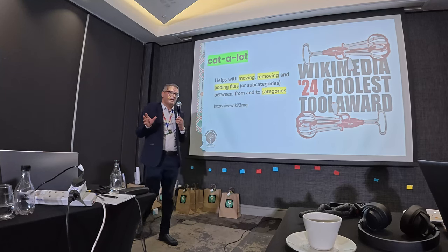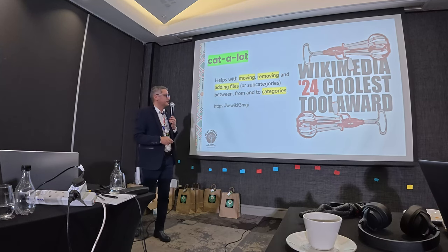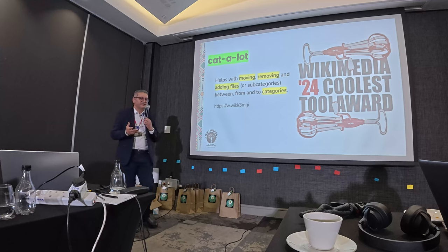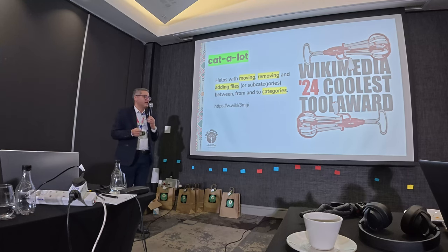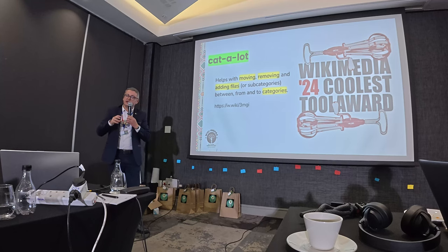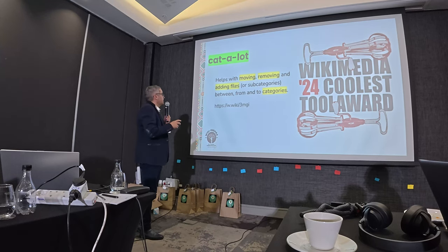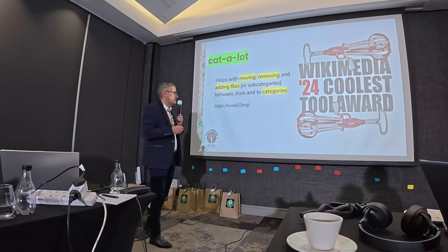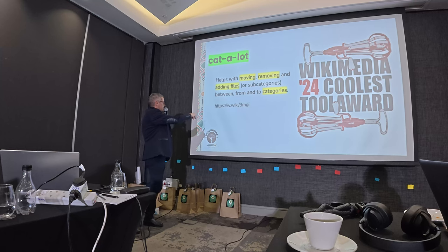The first gadget I'll cover is Cat-a-lot, a Wikimedia Coolest Tool Award winner. This tool helps with moving, removing, and adding files — not just one file, but a whole bunch. If you have a category and want to make changes to it, you can use Cat-a-lot. It's a very cool tool I use every day on Wikimedia Commons.